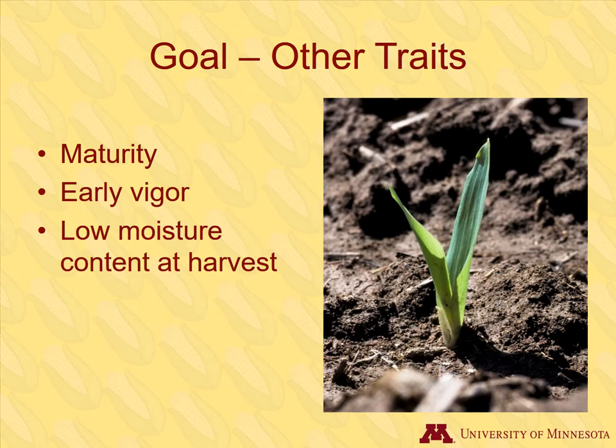There are other traits that breeders look for, such as timing of maturity, early seedling and plant vigor, and controlling moisture content at harvest. They even target genetics that make a corn plant better for certain climates and geographical areas.